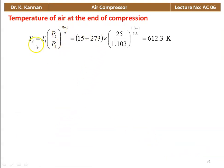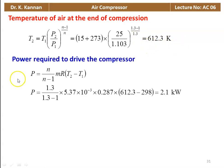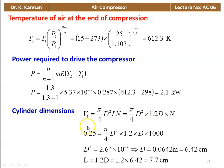Temperature of air at the end of compression: T2 equal to T1 into (P2 by P1) to the power (n minus 1) by n. So (15 plus 273) into (25 by 1.103) to the power (0.3 by 1.3) equals 612.3 Kelvin. Power required to drive the compressor: P equal to n by (n minus 1) into M into R into (T2 minus T1). Substituting: 1.3 by 0.3 into 5.37 times 10 to the power minus 3 into 0.287 into (612.3 minus 288) equals 2.1 kilowatts.